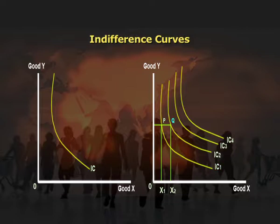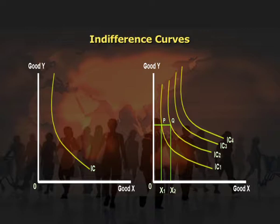In this diagram, point Q on IC2 represents a larger amount of X than point P on IC1, due to which the consumer will prefer to be at point Q. Therefore, the indifference curve analysis states that an IC which lies farther from the origin O represents larger combinations of goods X and Y, and hence provides a higher level of satisfaction than an IC which lies nearer to the origin. This diagram represents the indifference curves.